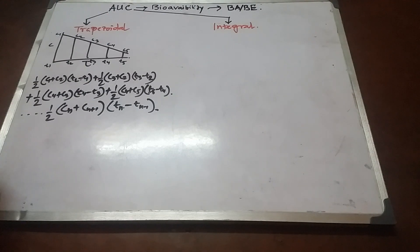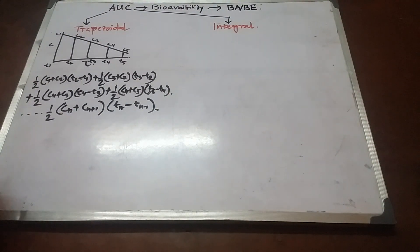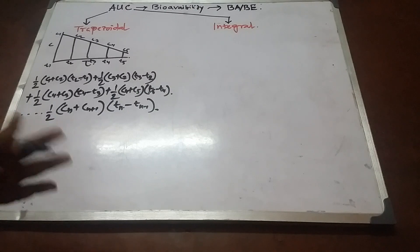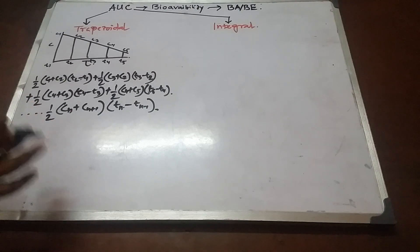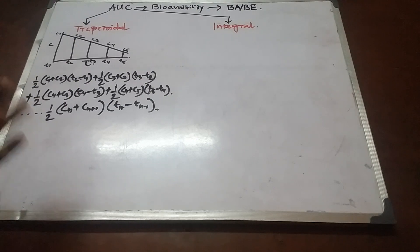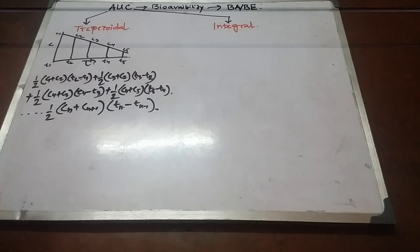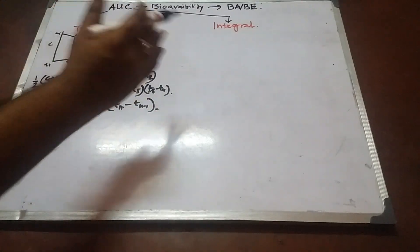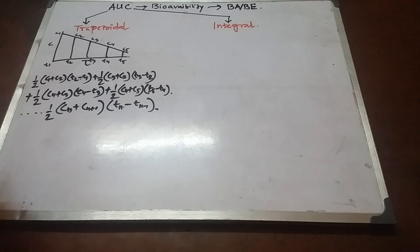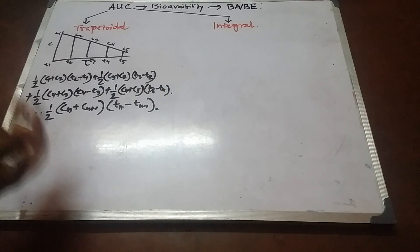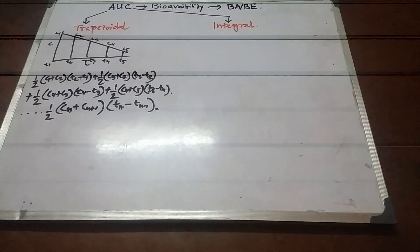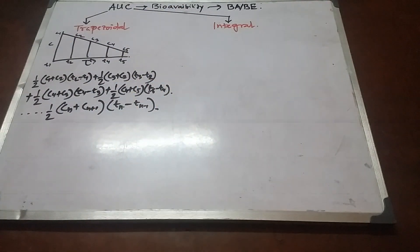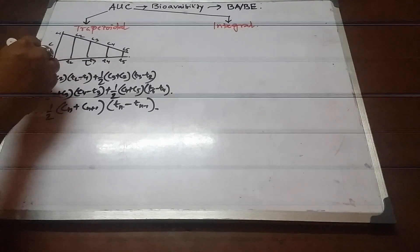The major advantage of the graphical method is that we can plot the exact area under the curve. However, the limitation is that we cannot plot up to infinity — that is, to the last moment of elimination. Only the visible area under the curve can be plotted using the trapezoidal method. So we can only measure up to what we can see, such as up to C5; beyond that it is not possible.